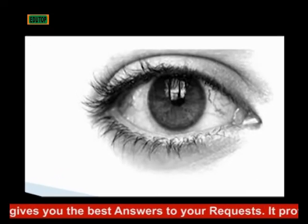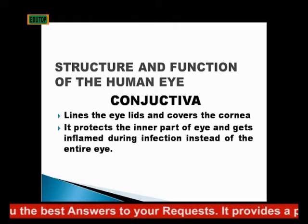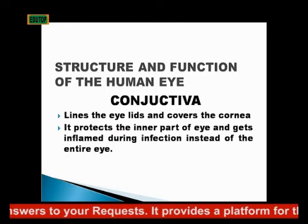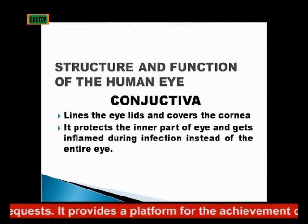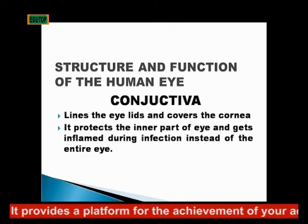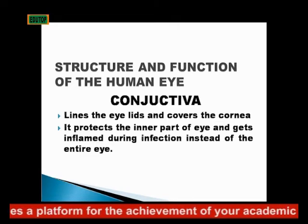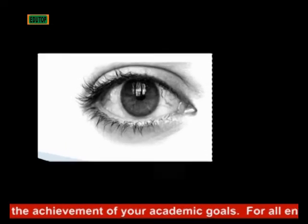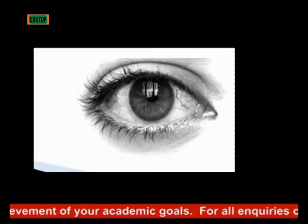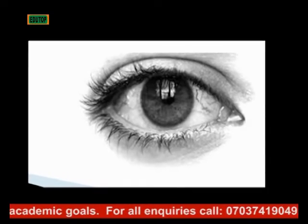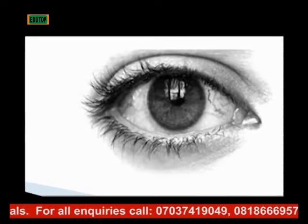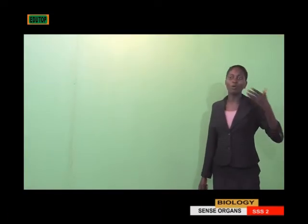The conjunctiva lines the eyelid and covers the cornea. It protects the inner part of the eye and gets inflamed during infection. That's why there is that disease affecting the eye that people call apollo — it's called conjunctivitis because it's actually the conjunctiva that is affected and inflamed during infection.